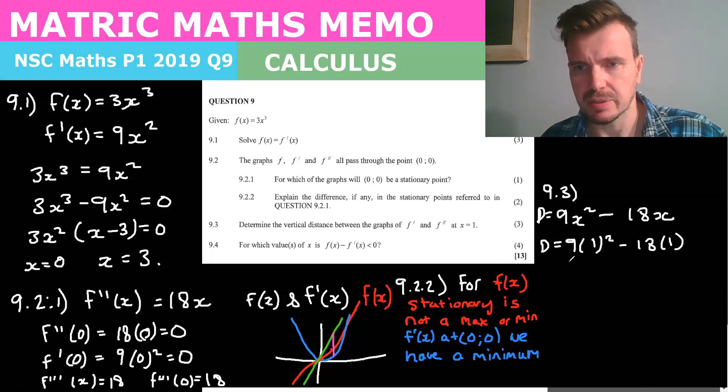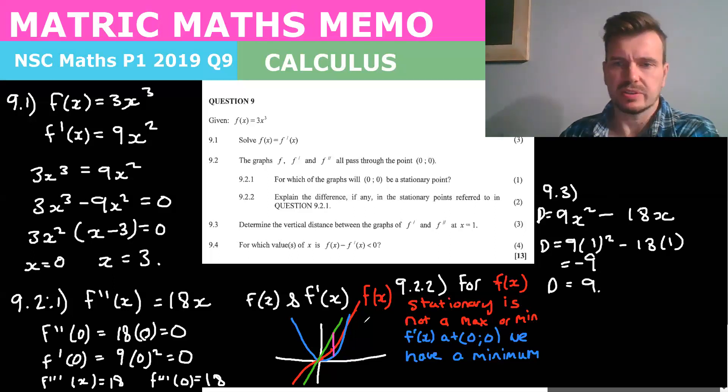And so we have 9 minus 18 which is equal to negative 9. Therefore the distance is equal to 9 because they're not asking for the direction.